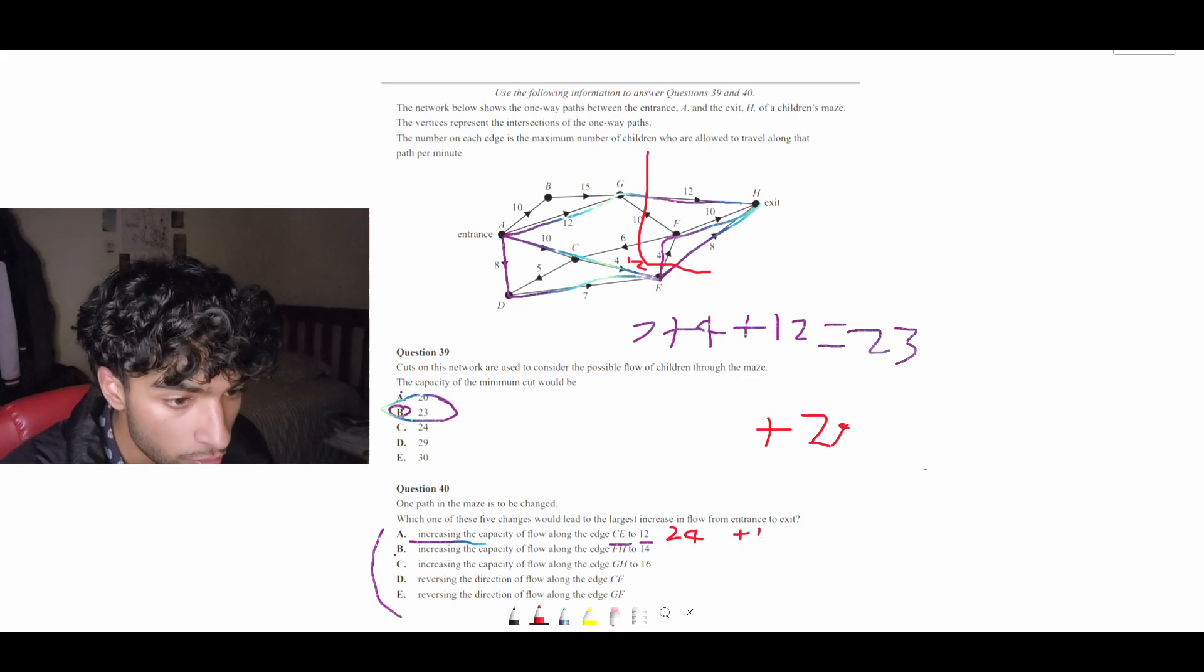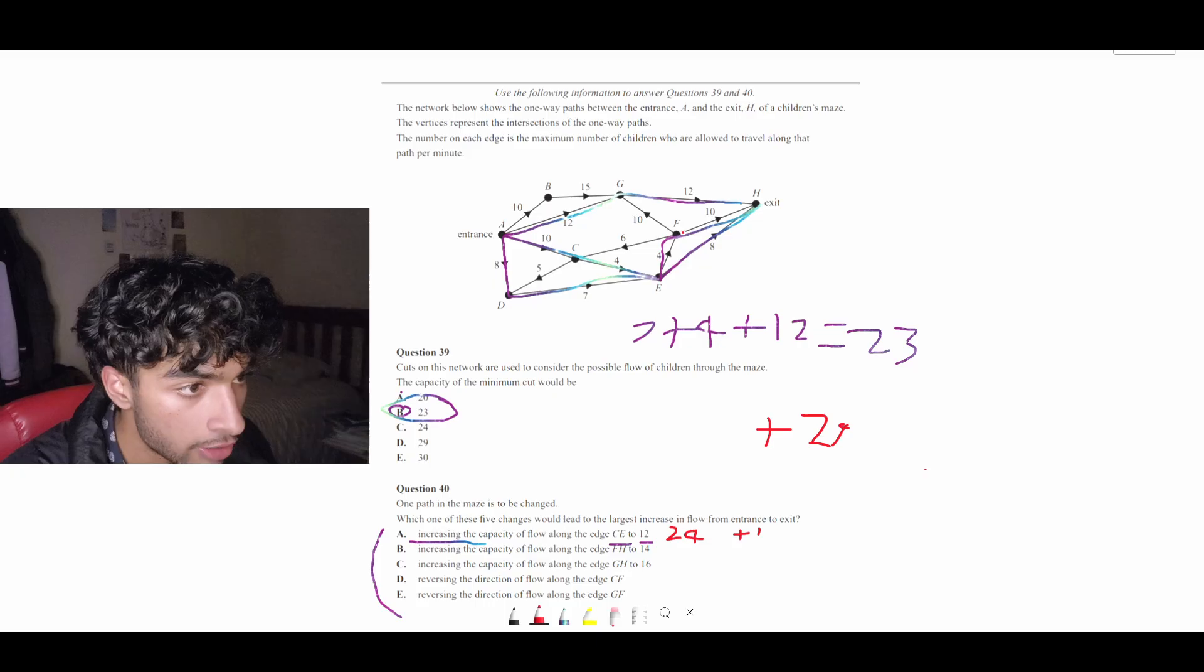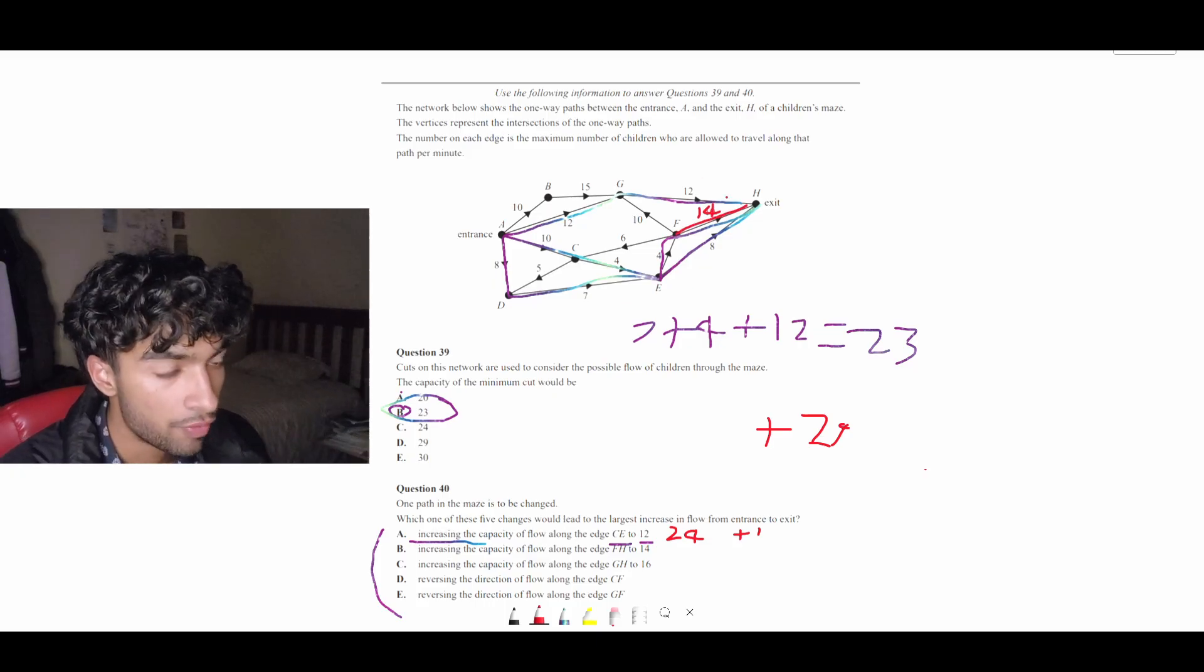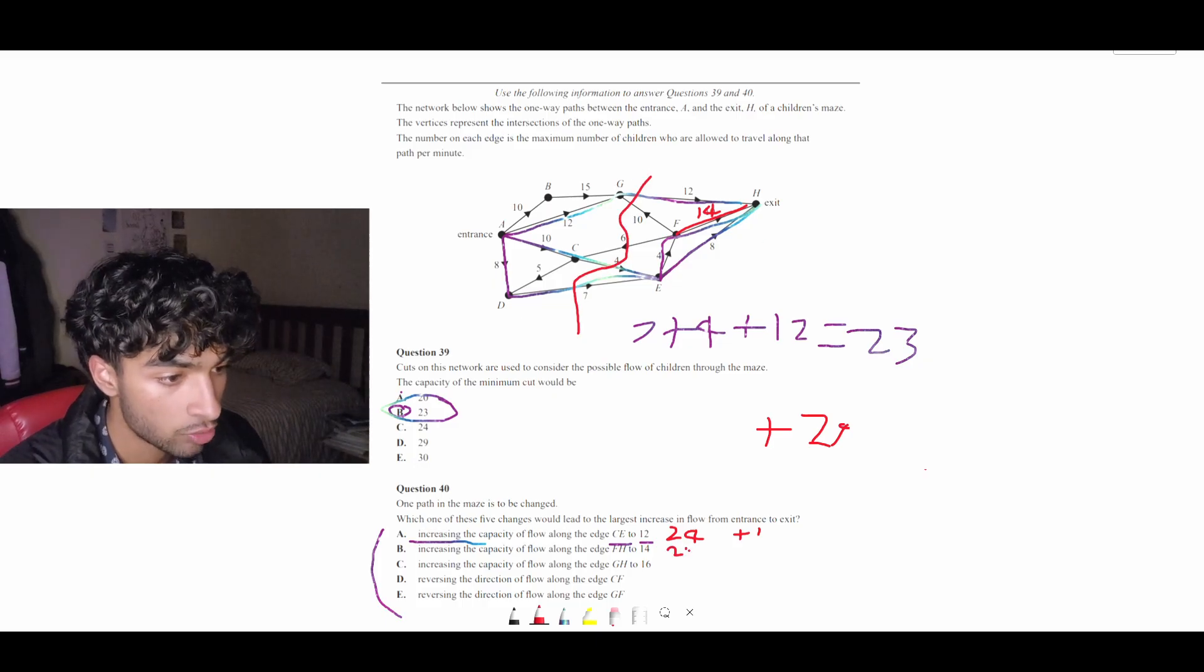Now B is increasing the capacity along FH to 14. So let's check FH and make it 14. FH is here 14. Now this has no effect because as we saw, we go 7, 4, 12. So that has no effect. It would stay as 23 because it's not on our minimum cut line.